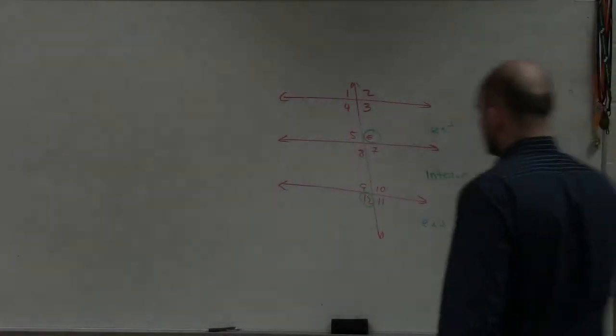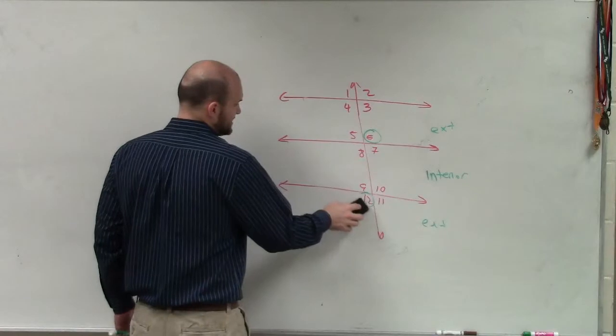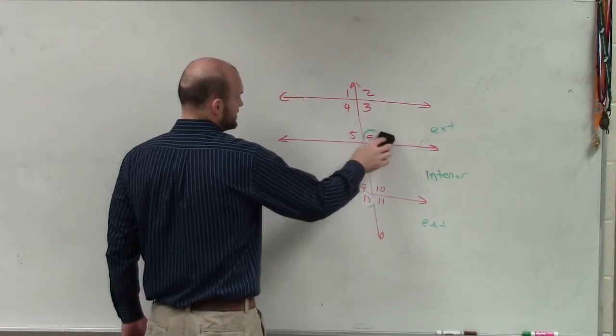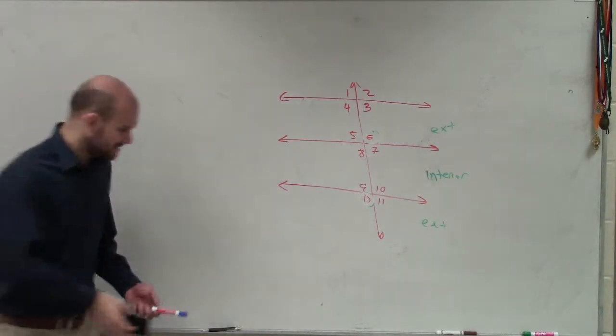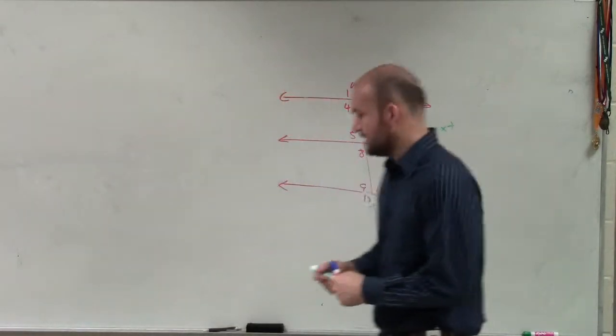This one says now instead of looking at 6, they're asking us to do 3 and 3 and 9. Yeah, all right. So now what I'll do is I'll just label 3 and 9.